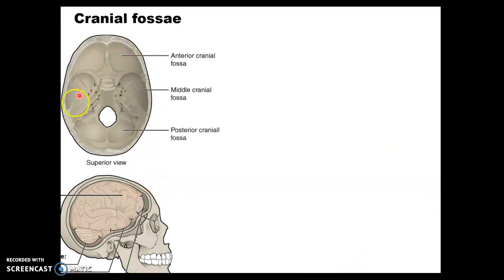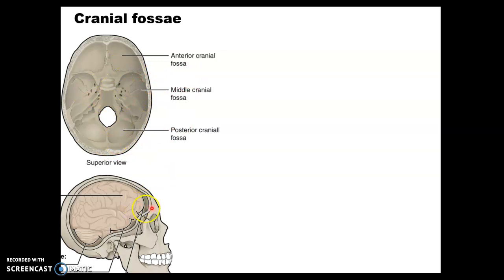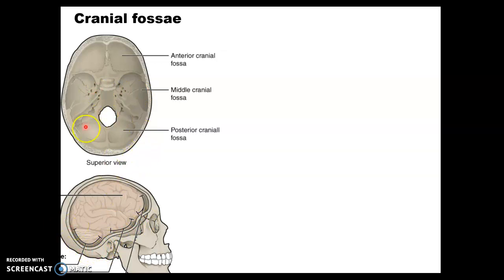On this slide we can see where the brain sits inside the skull. Looking at that area, which is made up of many bones, we can see three distinct regions called fossae — these are basins inside the cranial cavity. You have an anterior cranial fossa, a middle cranial fossa, and a posterior cranial fossa.